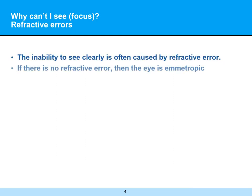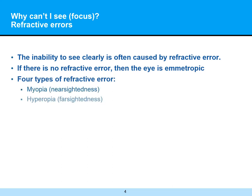The inability to see clearly is often caused by refractive error. If there is no refractive error, the eye is considered emmetropic. However, it's very common to get refractive error, and the four different reasons for that would be myopia, also known as nearsightedness; hyperopia, also known as farsightedness; astigmatism; as well as presbyopia. We'll go over each one of these in a little bit more detail.